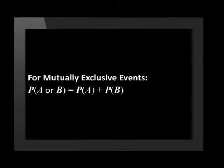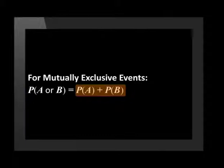Mutually exclusive events are events that cannot happen at the same time. Eating and sleeping are examples of events that are mutually exclusive. If two events, A and B, are mutually exclusive, then the probability of A or B is equal to the probability of A plus the probability of B.